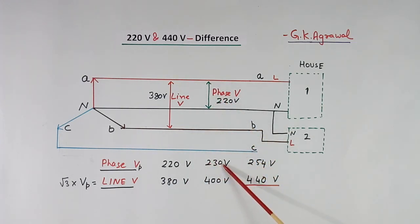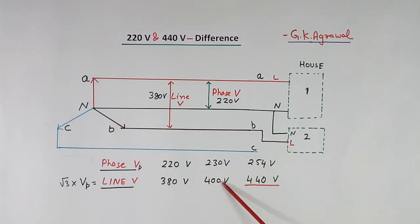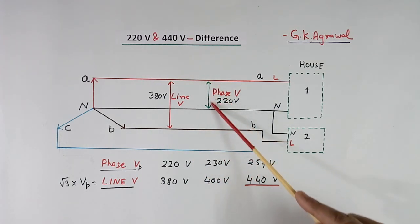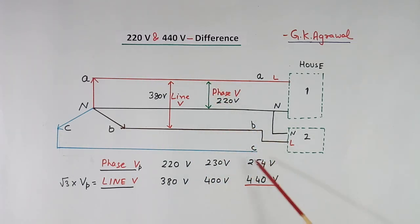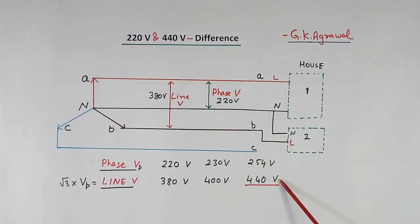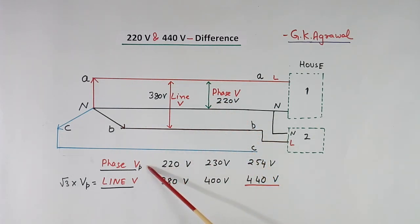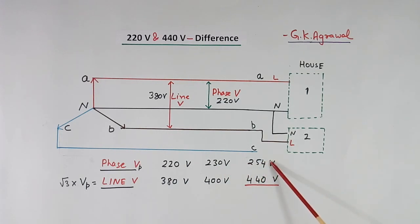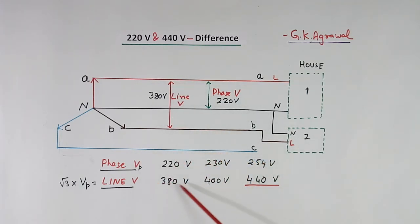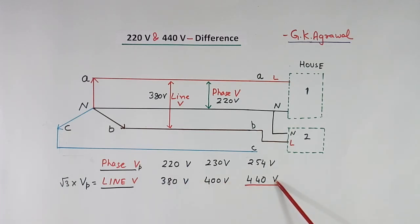If this phase voltage is 230V, line to line you will get 400V. Similarly, if this phase voltage is 254V, the line-to-line voltage is 440V. This phase voltage will change — it may be less than 220V, may be 220V, may be 230V, may be 254V. So line-to-line voltage may be less than 330V, 380V, 400V, or 440V.